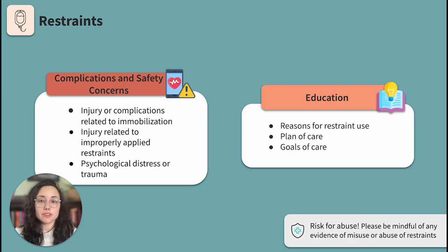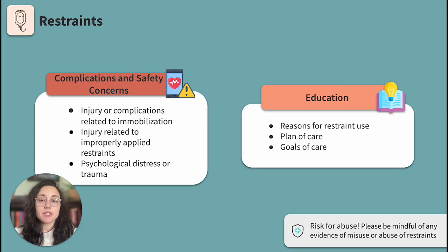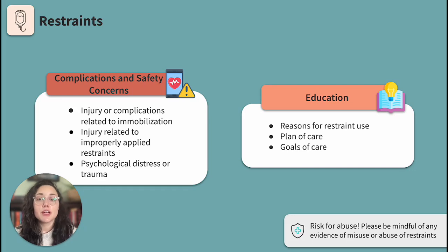Restraints are a safety tool that can quickly turn unsafe. Common safety concerns include injury or complications related to immobilization — these occur when the restraint is too tight or range of motion exercises are not performed — and injury from improperly applied restraints. Be aware that restraint use can be psychologically traumatizing; clients may feel humiliated, agitated, or depressed. Provide emotional support and remove restraints as soon as possible. Also be mindful of the power imbalance between nurse and restrained client, and know who to speak to if you suspect misuse or abuse.